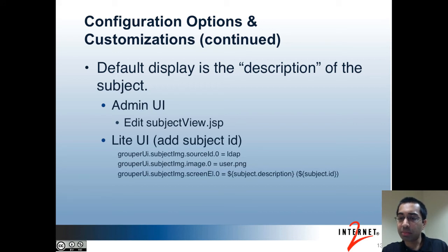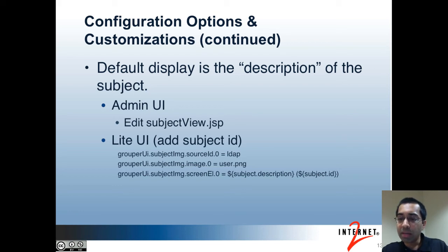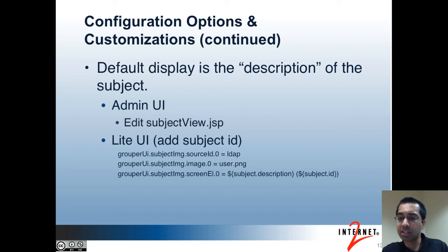You may also want to change how subjects are displayed, for instance in membership lists. By default, the Grouper UI will display the description of the subject as configured in the sources.xml file. If the description is just the subject's name but you also want to display the subject's ID or some other attribute, that's possible. In the admin UI you can do this by editing the subjectview.jsp file. In the light UI, this is easier since you just update a few properties in media.properties. You'd specify the source ID and then define an expression language for how the subject is displayed — for example, the subject's description followed by a space and the subject's ID in parentheses.